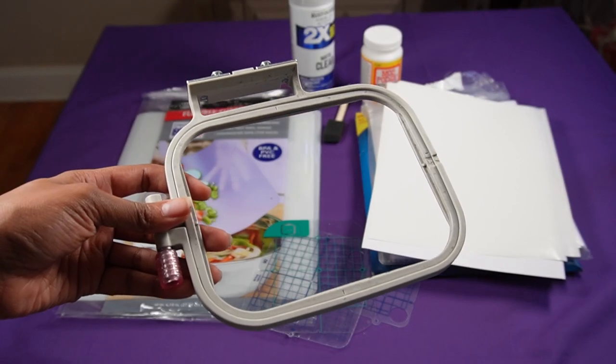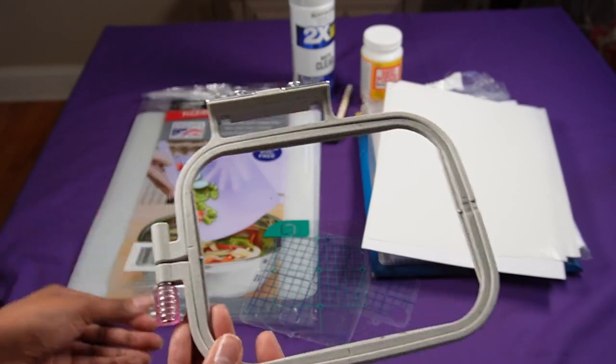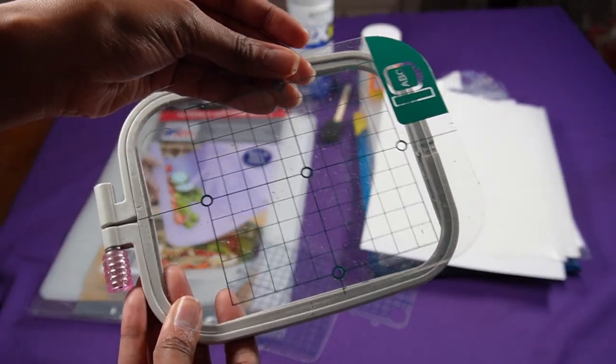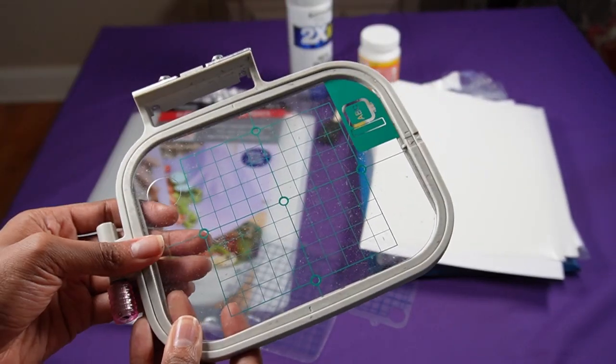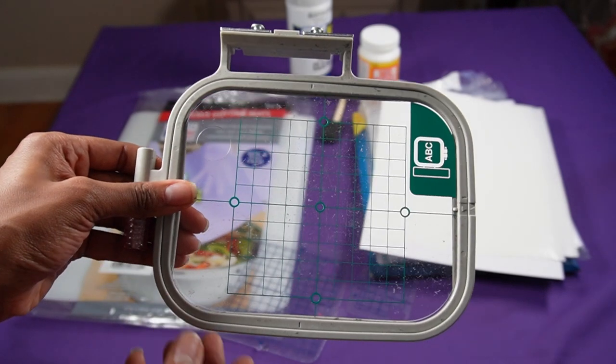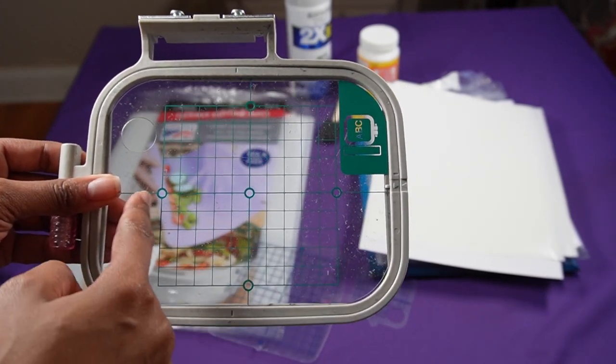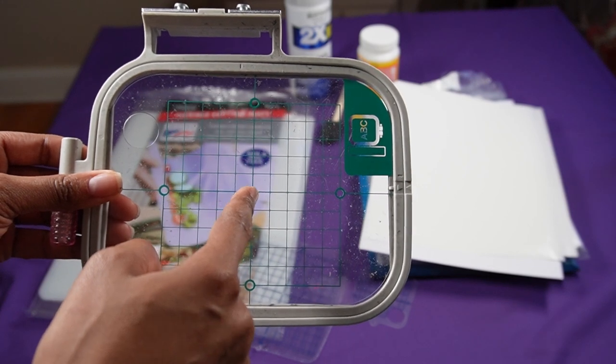When you are embroidering, you have your embroidery hoop and then you use something like an embroidery hoop template like this, and you place it inside of your embroidery hoop. This basically helps you to center your design because you would center your design with this point here.